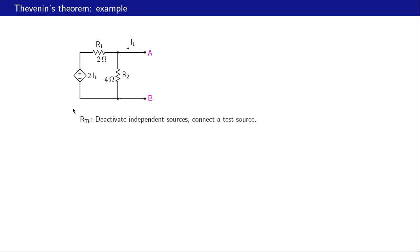Now let us find the Thevenin resistance. To do that we deactivate the independent sources in the original circuit. In this case there are no independent sources, so nothing needs to be done. Then we look from A-B. Because we have a dependent source we cannot directly figure out the equivalent resistance as seen from A-B, so let us use another method: connect a test source and then find the ratio of the test voltage to the test current, which gives us Rth.